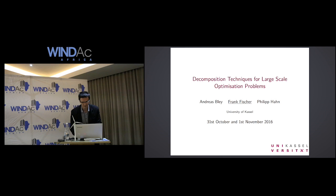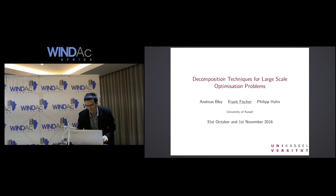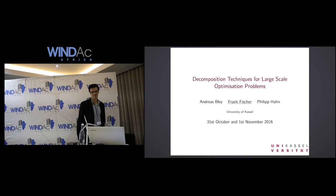How many kilometers north of Frankfurt? About 200. So for those of you who would like to go Google Earth or Google Maps and look where it is, if you're interested — the talk is about decomposition techniques for large-scale optimization problems.